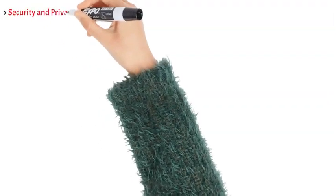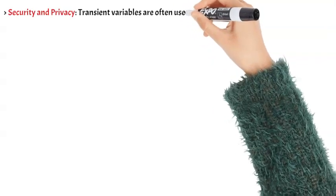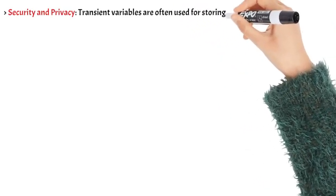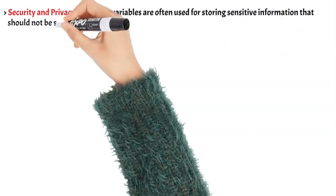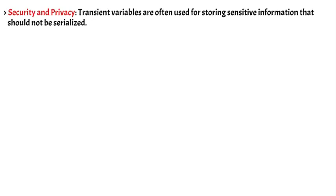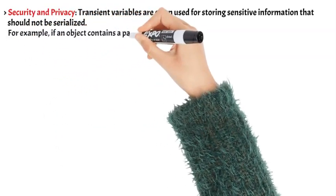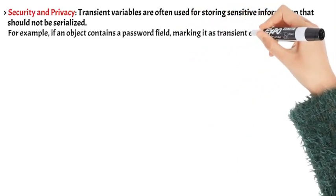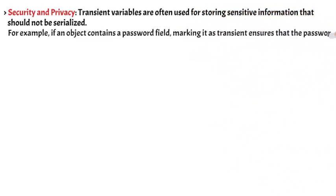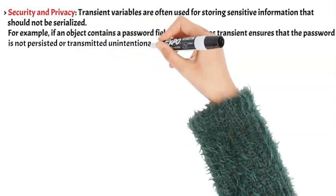Security and privacy: Transient variables are often used for storing sensitive information that should not be serialized. For example, if an object contains a password field, marking it as transient ensures that the password is not persisted or transmitted unintentionally.